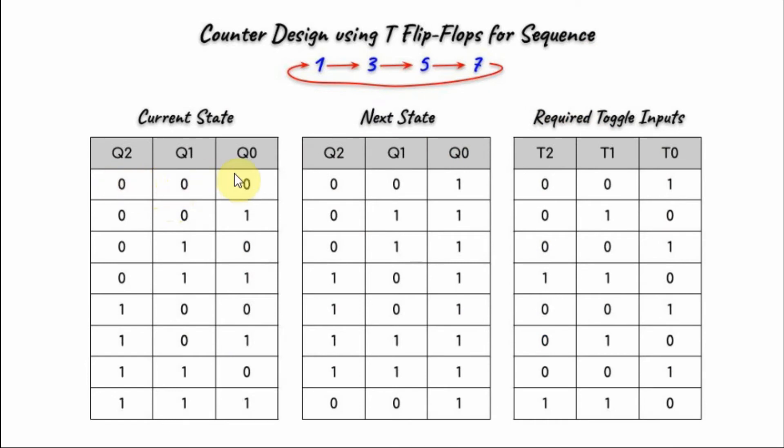Starting with the current state of 0, the next state should be 1. When we have 1, the next state should be 3. When we have 2, it should stay 3. When we have 3, we should get 5.